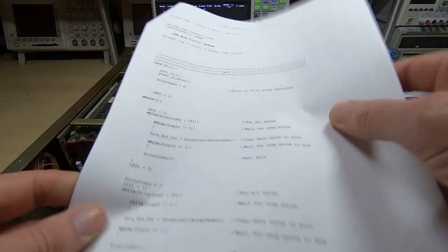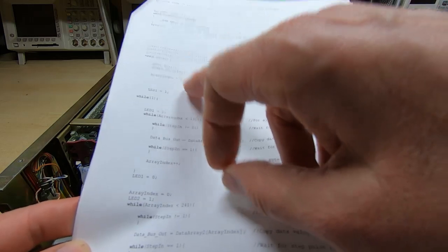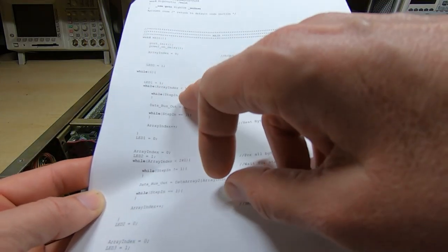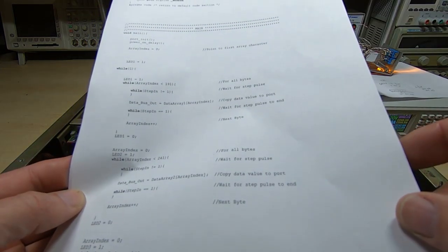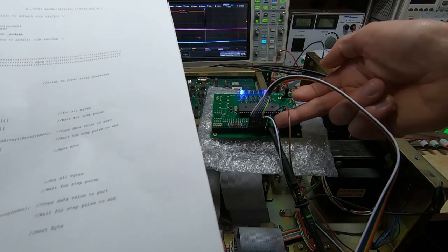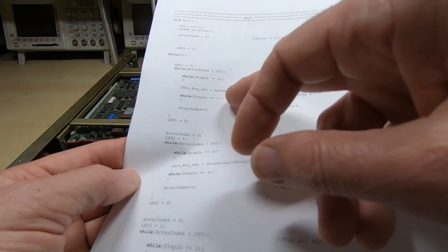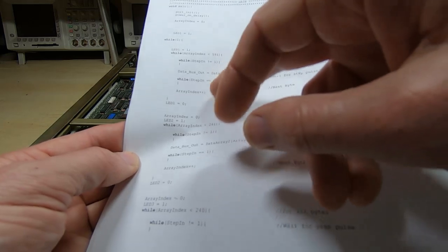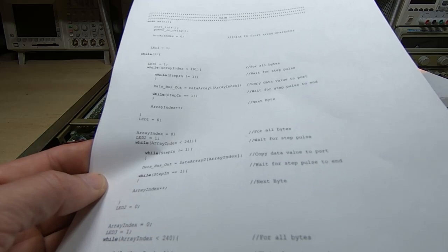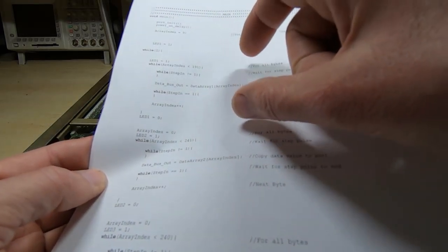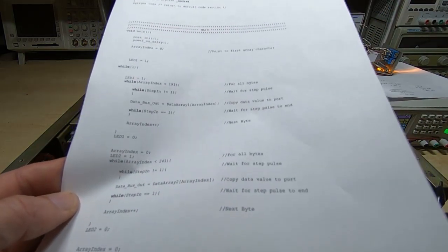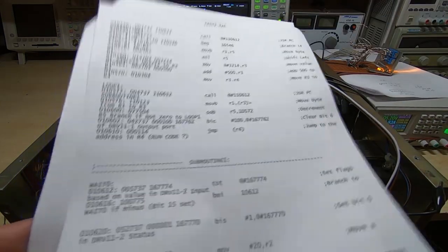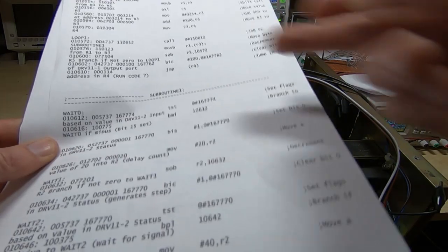All it does is use an index into one of these data arrays, set the index to zero, set the first LED on, and then sit and wait for the next high pulse from the step input. When it sees the high value it loads the next data value from the array, then waits for the pulse to go low, increments the index, and loops around — doing that for all the bytes in that table. From looking at the code, the system appears to load a bootloader: this ROM code seems to want to load a limited-size bootloader from tape and then hand control to the bootloader it's just loaded.